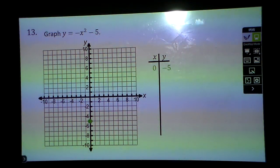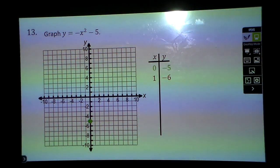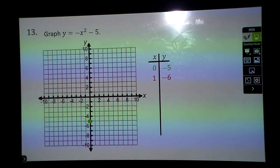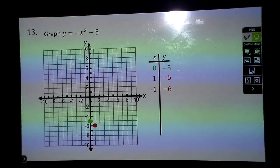Plot 0, negative 5. Put a 1 in, and 1 squared is 1, make it negative, and minus 5 makes negative 6. And negative 1 squared is positive 1, which when you make it negative, will also make negative 6.